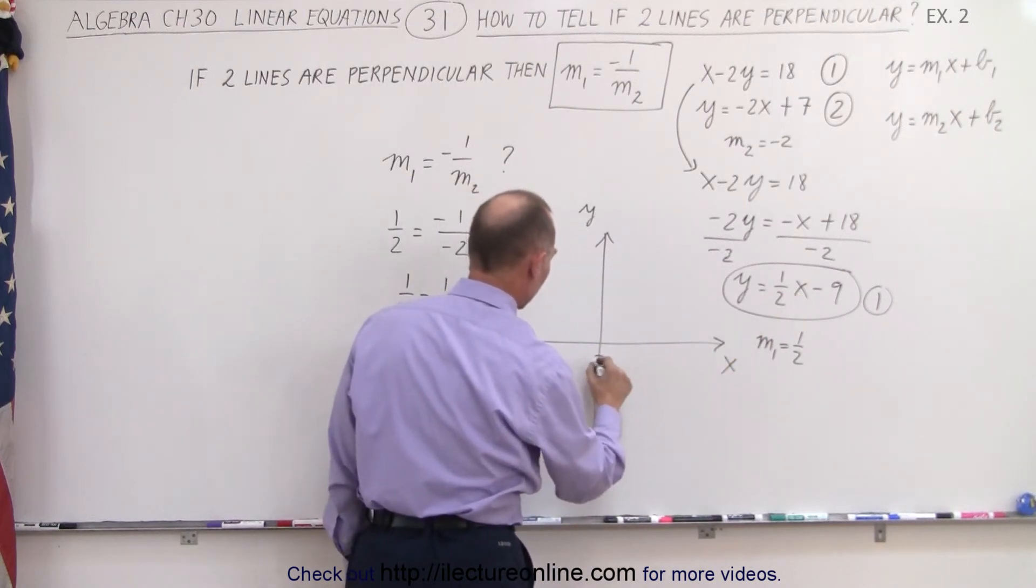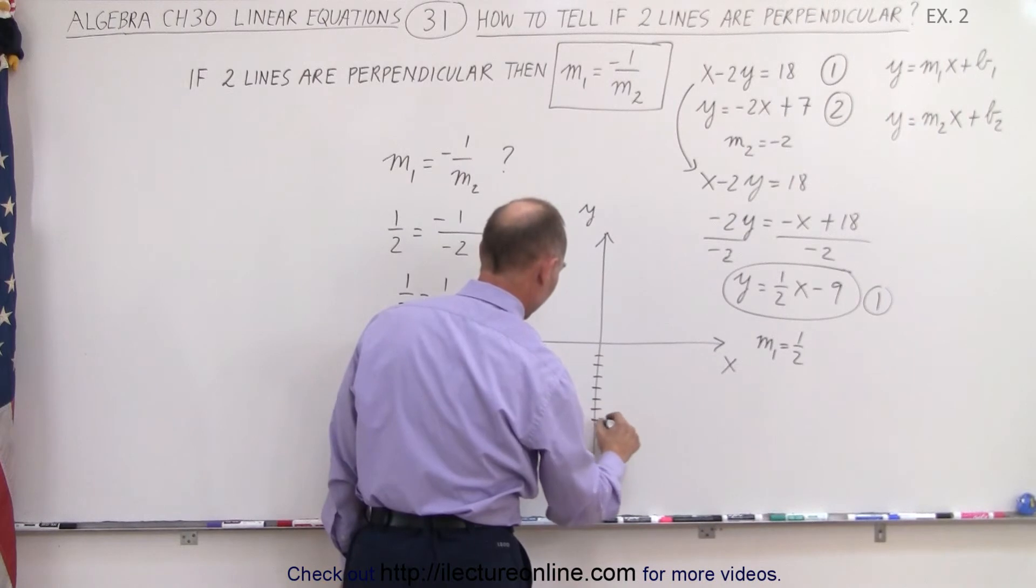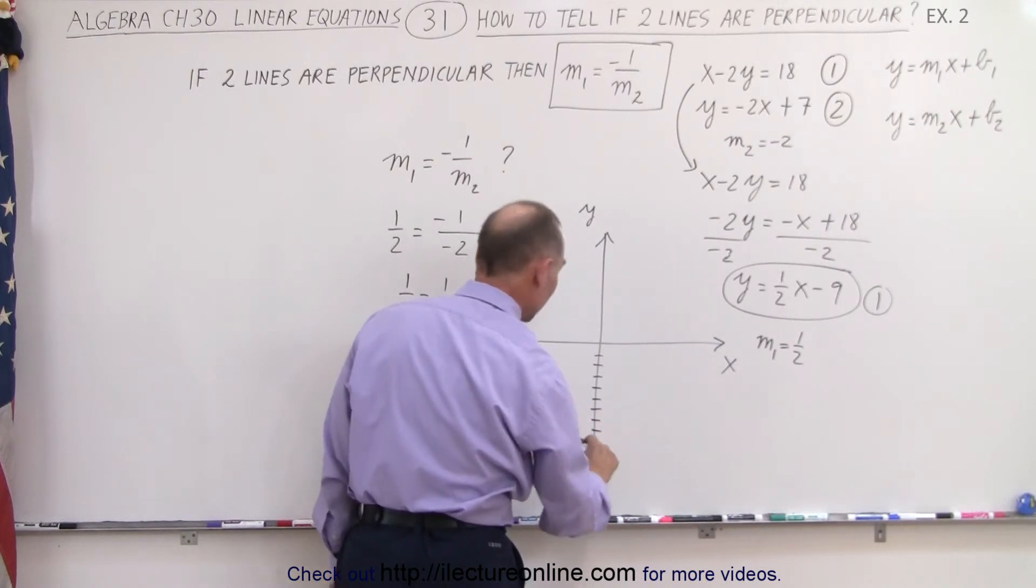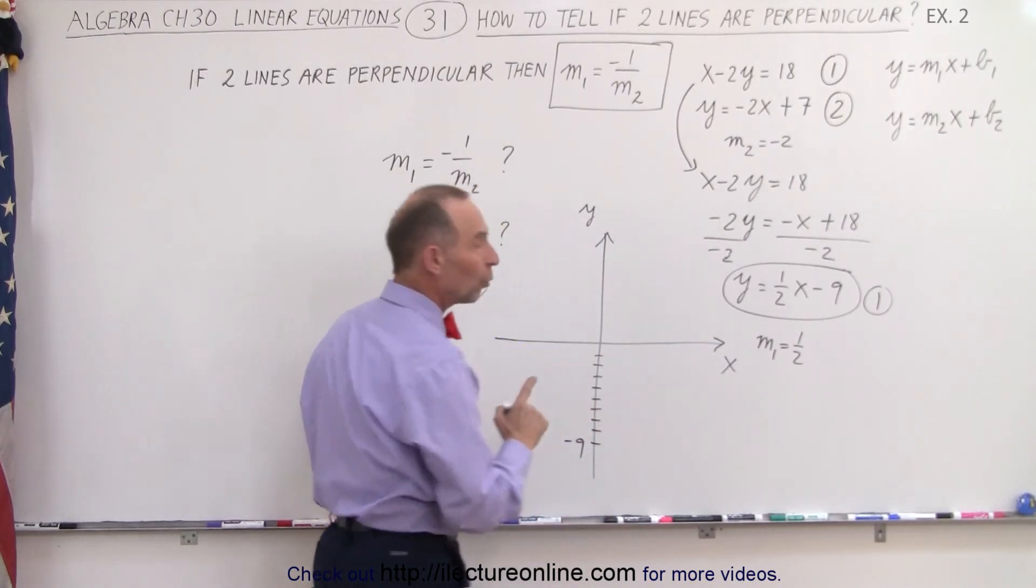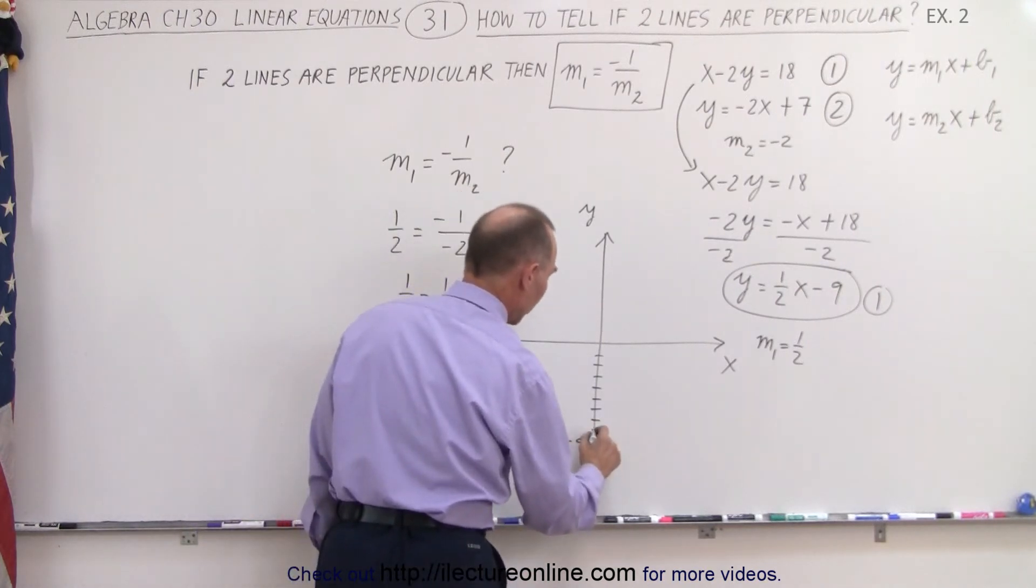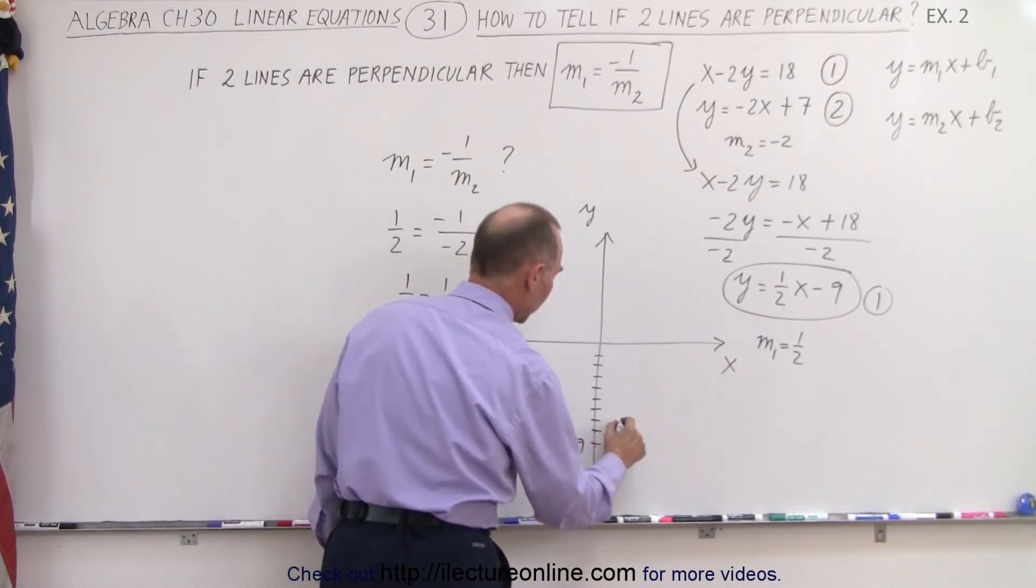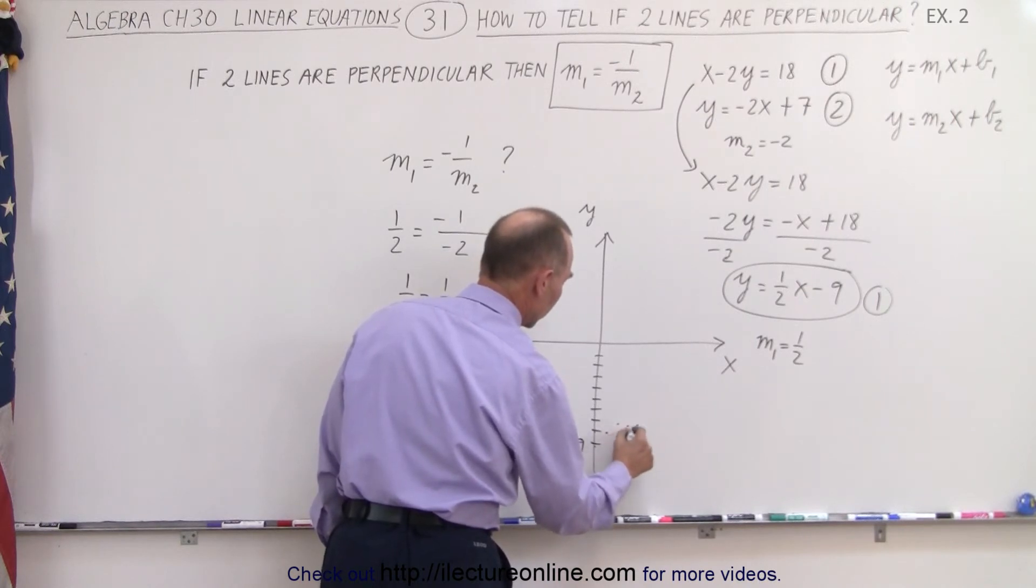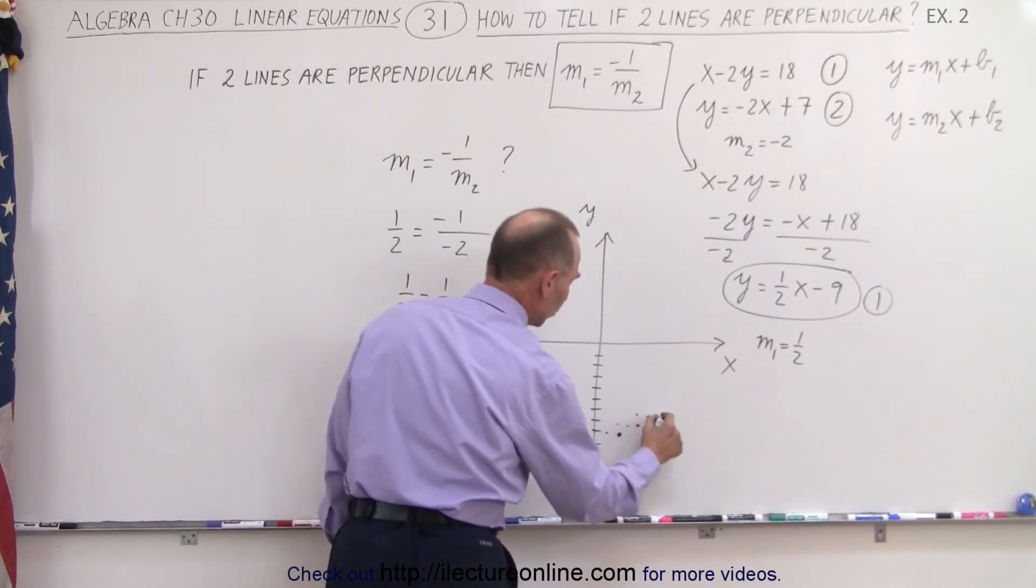the y-intercept is minus 9. 1, 2, 3, 4, 5, 6, 7, 8, 9, minus 9, with a slope of plus one-half. So that means we go up 1 and over 2, up 1, over 2, up 1, over 2, up 1, over 2, like this.